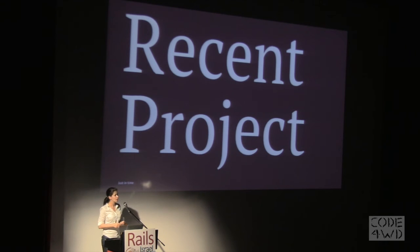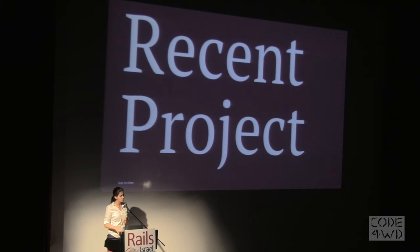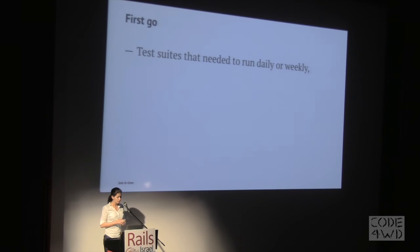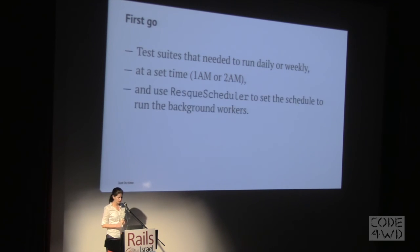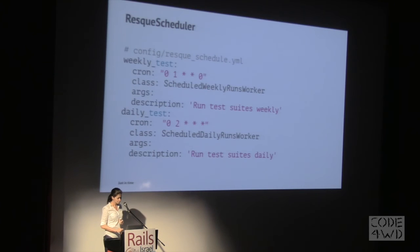I want to talk about a recent project. I was working on a project for a marketing company — they were letting their users write tests to check that certain marketing tags were on a page, running that through acceptance tests in the browser. We wanted to allow them to run the tests at certain times, so we needed a schedule. We created a ScheduleRule class that handled all the rules for which test suites to run in the app, and used Resque Scheduler to set the schedule to run the background workers.